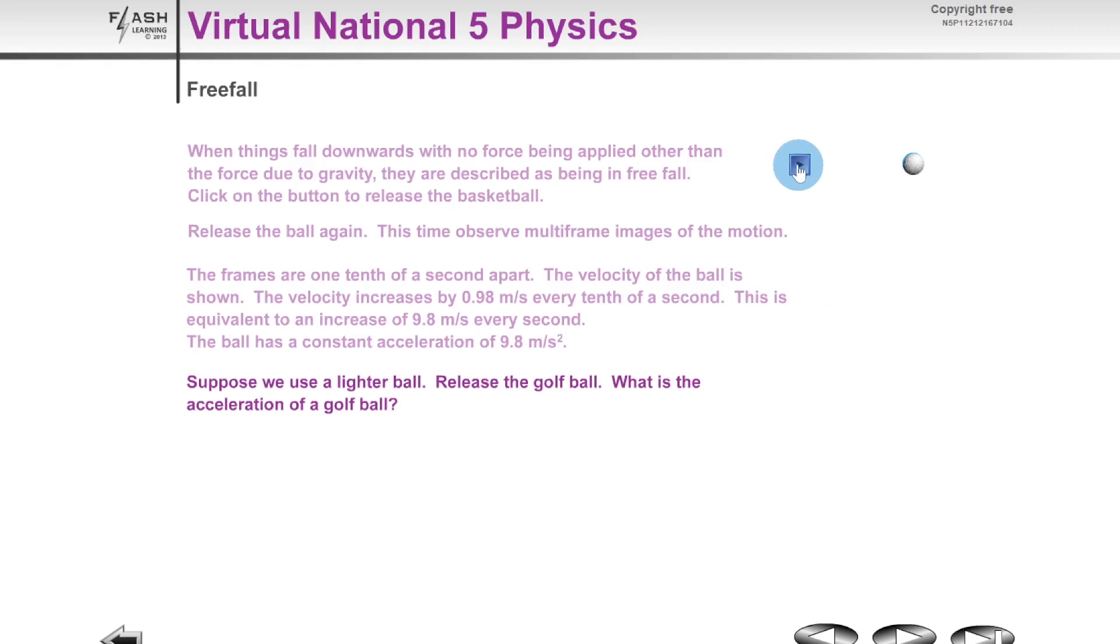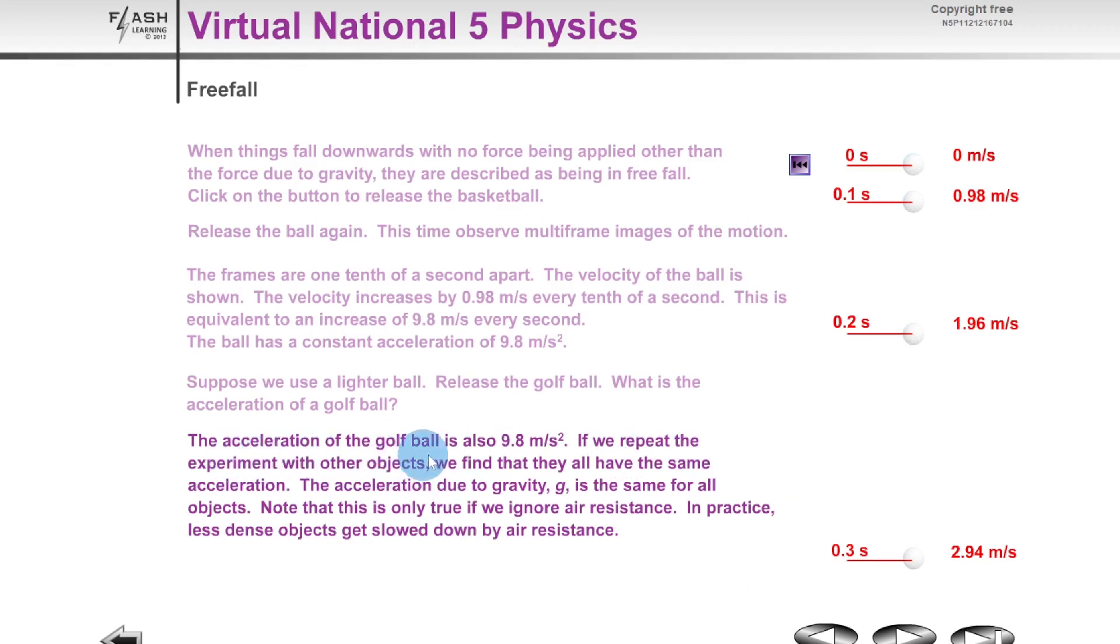If I click play, you'll see we get the exact same speeds every tenth of a second. This tells us that the acceleration of the golf ball is also 9.8 meters per second squared. If we repeat the experiment with the other objects, we find that they all have the same acceleration. The acceleration due to gravity g is the same for all objects, but note that this is only true if we ignore air resistance.